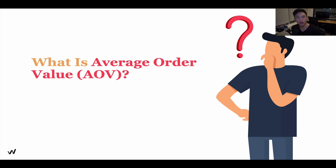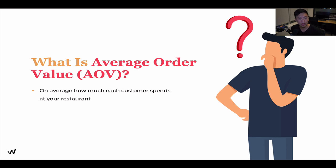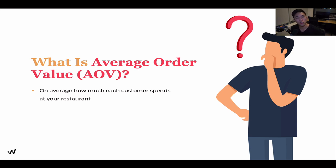What is AOV? It is basically how much people are spending at your restaurant on average. For example, at McDonald's, I would typically spend around eight to nine bucks on a meal. When 100 people go through the doors — some buying an ice cream, others a Big Mac, others a smoothie — on average, how much are customers spending at that location? That's what average order value, or AOV, means.